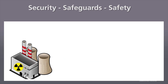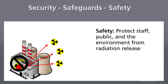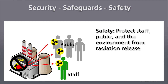Safety, on the other hand, deals with accidents that might happen, whether through neglect or a completely unintended accident. It is meant to protect both the facility staff and the public from releases of radiation from a nuclear facility.